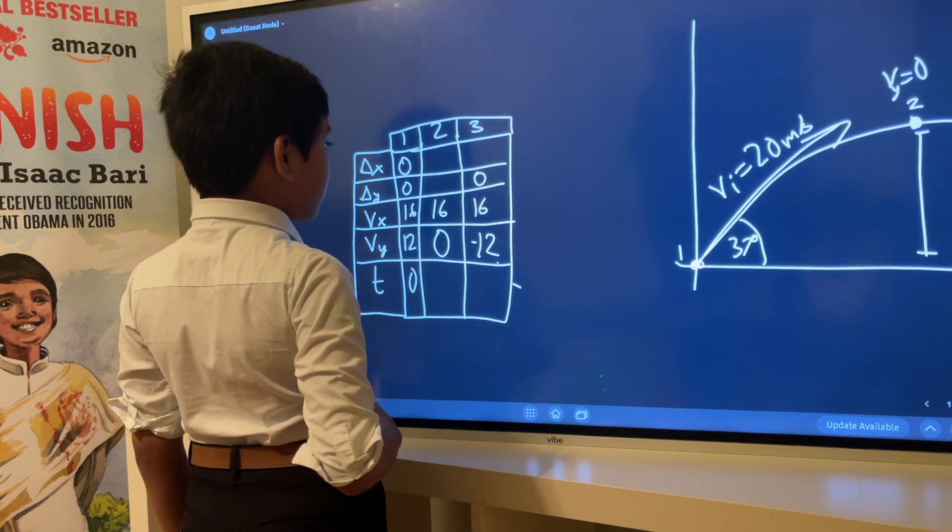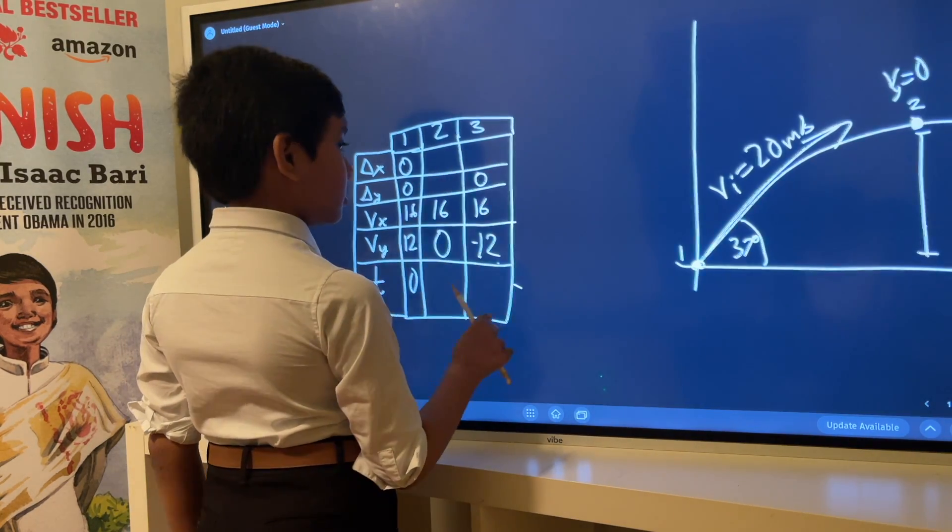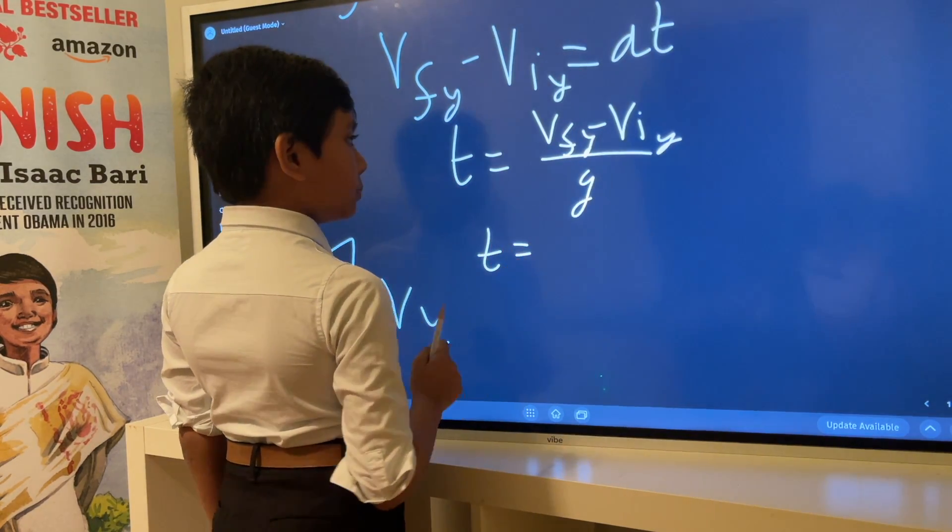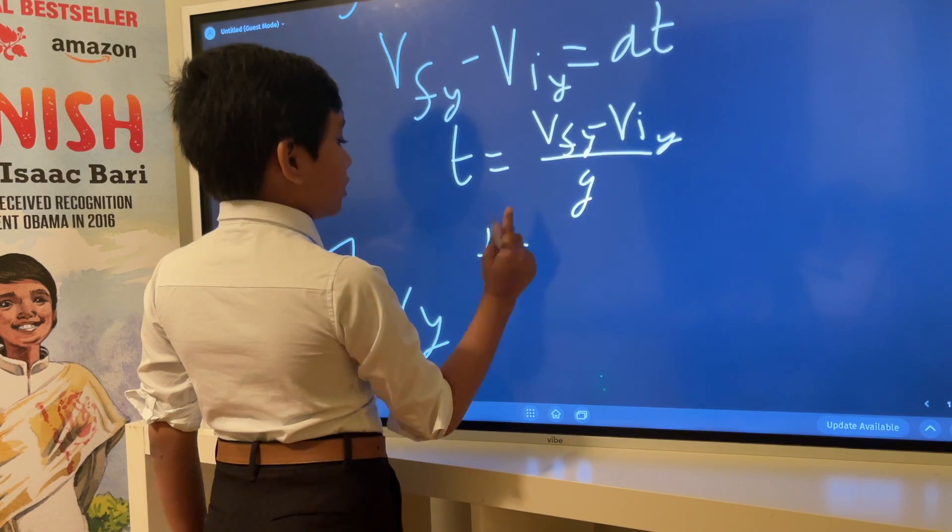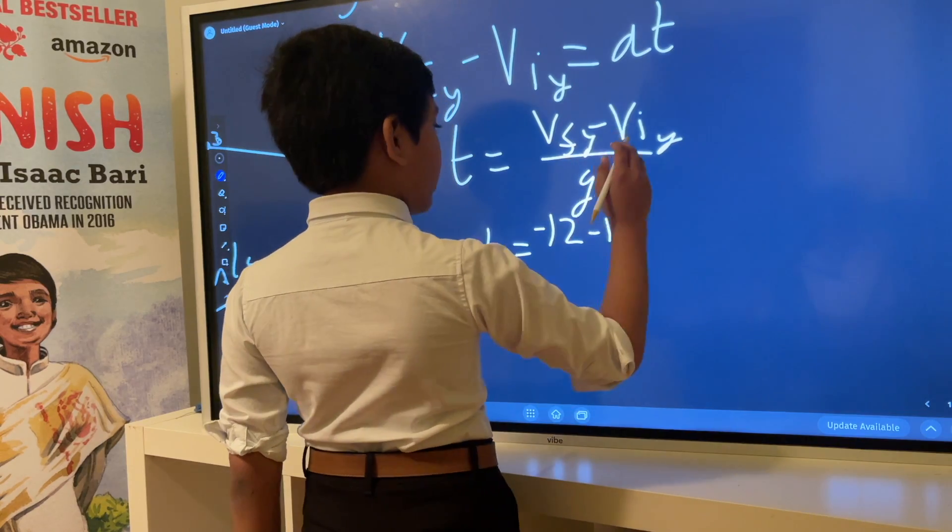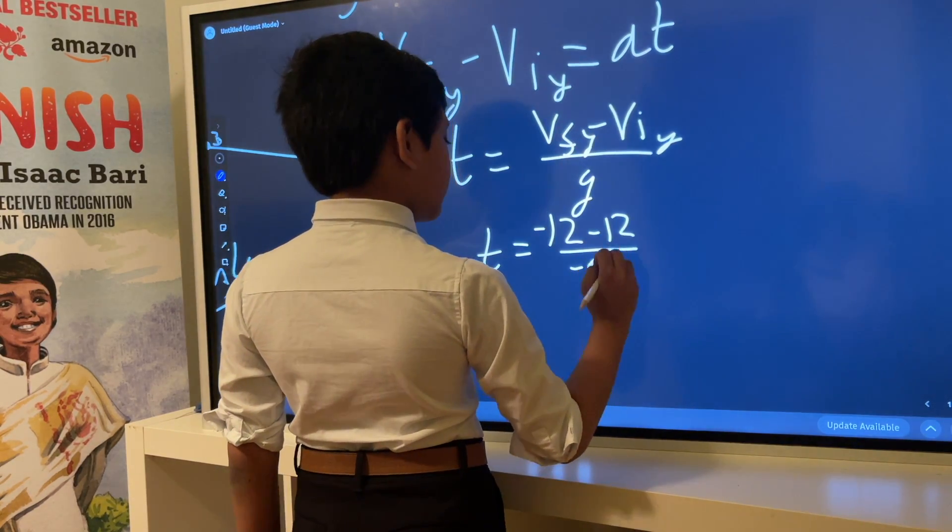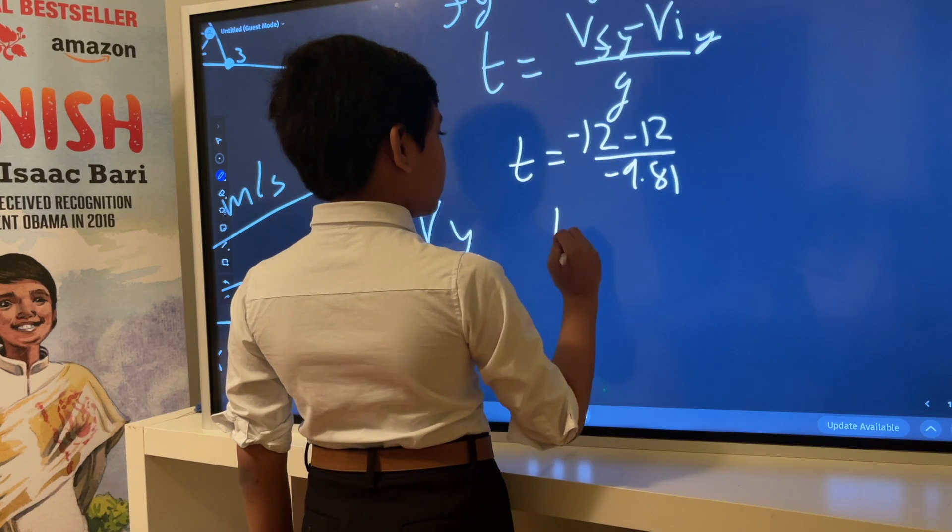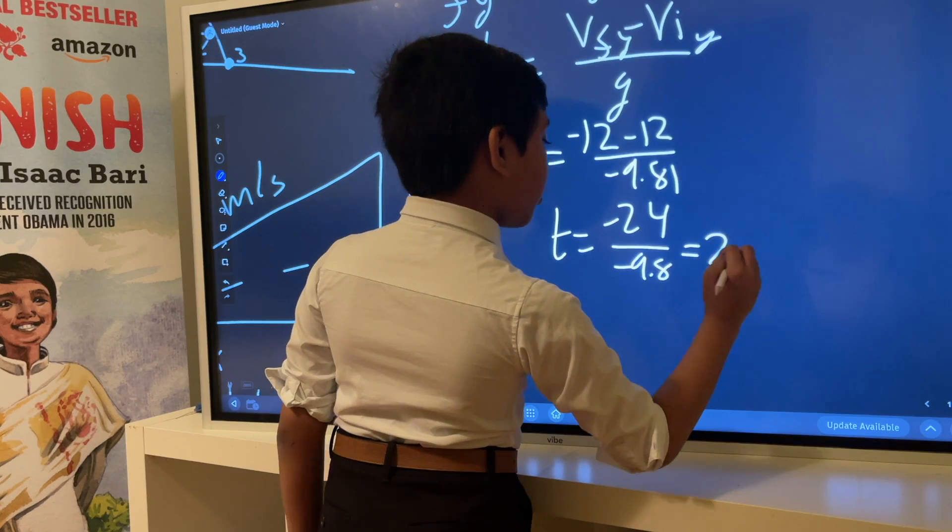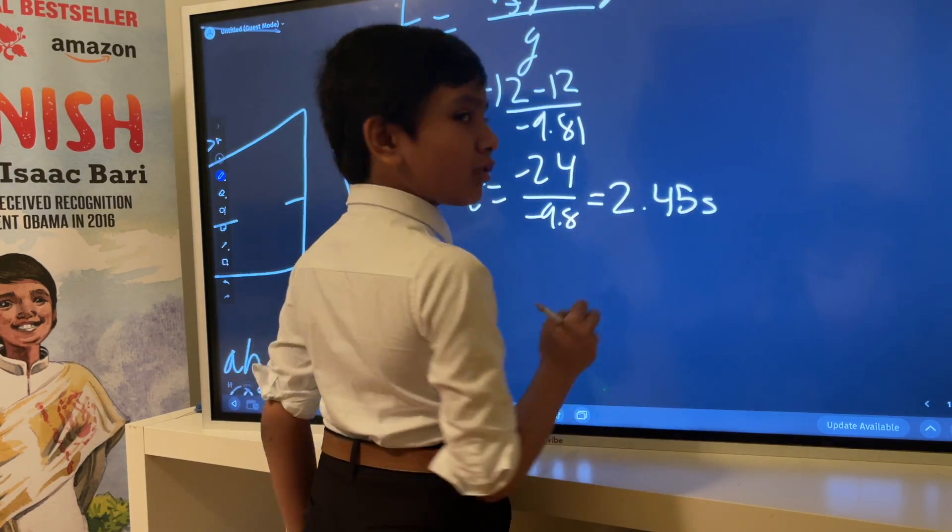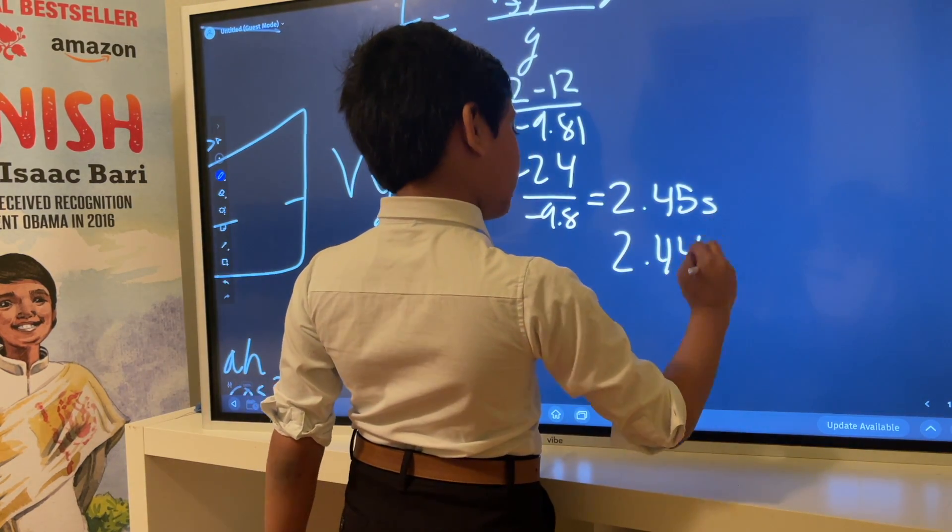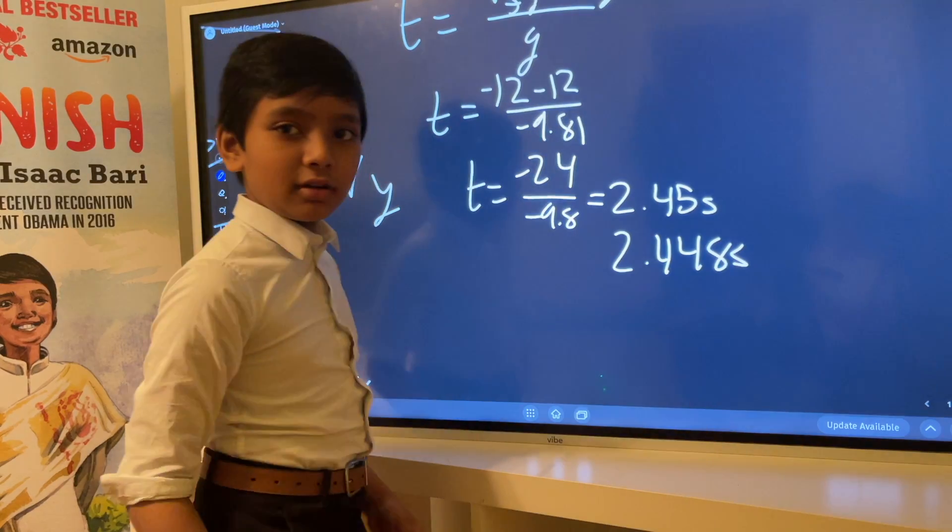Now we only have five spots to fill in. We can quickly fill in two of those spots. We know v_f_y is minus 12, v_i_y is 12, so minus 12 minus 12 over g is minus 9.8. If you want to be a nerd, a geek, and go to three decimal places, here's your answer.